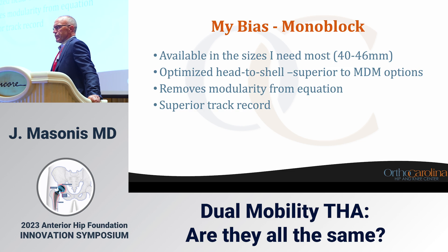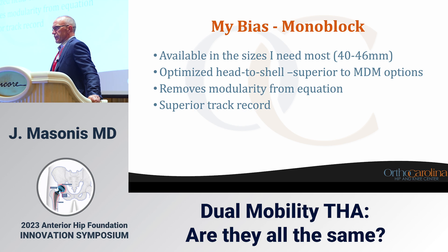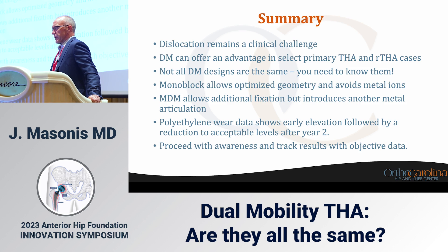My bias is the monoblock — it's available in the sizes I need, typically 40 to 46, with optimized head-to-shell geometry and superior range of motion compared to the modular dual mobility, and it removes modularity from my equation. I think the superior track record of the monoblock is why I favor it.